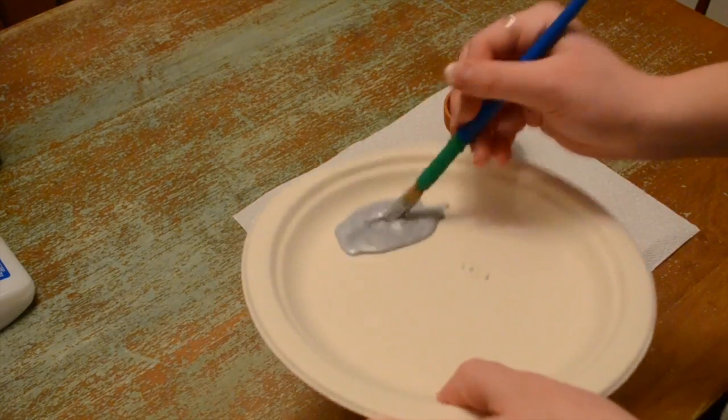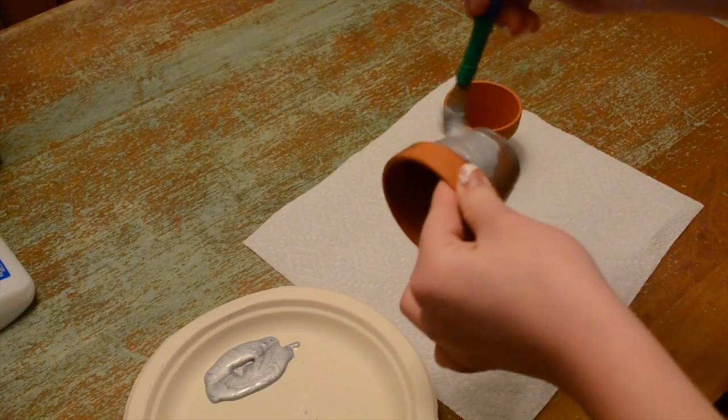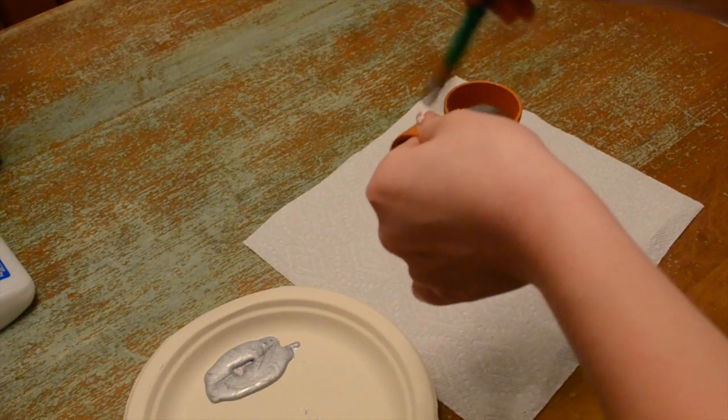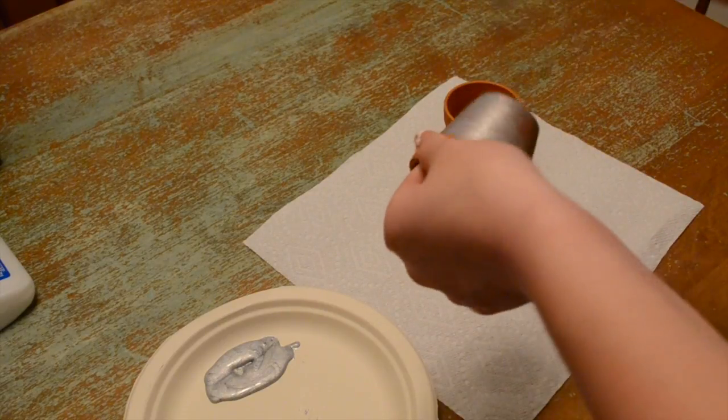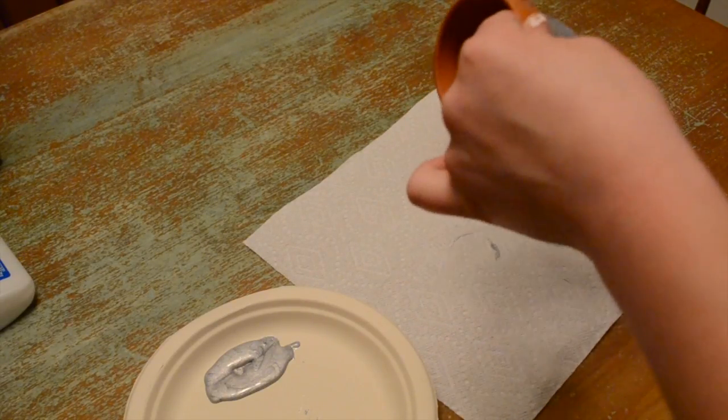You are then going to take your silver acrylic paint and start applying it to the mini pots. And continue this until both pots are fully covered.